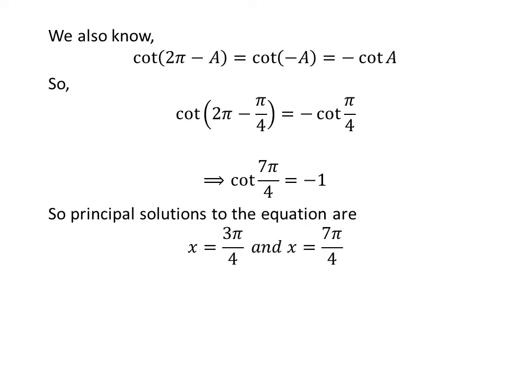So the principal solutions to the equation cotangent of x is equal to minus 1 are 3 times pi upon 4 and 7 times pi upon 4.